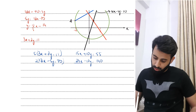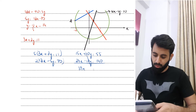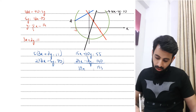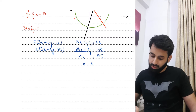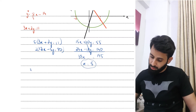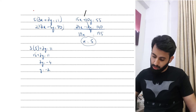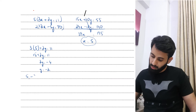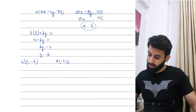So x = 195/39 = 5. Substituting back into 3x + 2y = 11: 15 + 2y = 11, so 2y = -4, giving y = -2. The center of the circle is C(5, -2).